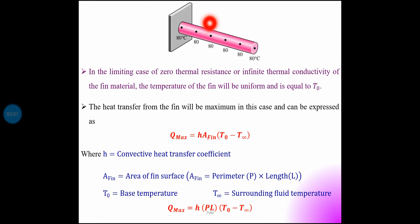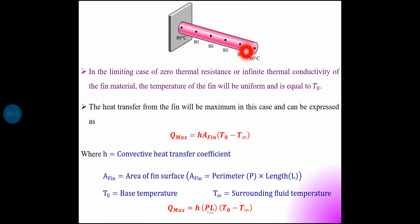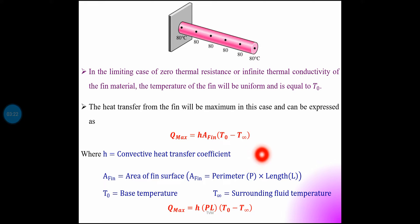A is the area for convection — this is the cylindrical area for convection. The length is L; perimeter is P, and L is the length of the fin. So Q-max equals H into P·L into (T0 minus T-infinity).